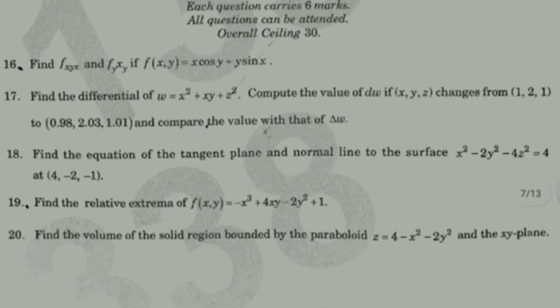Find the relative extrema of f(x,y) = -x³ + 4xy - 2y² + 1. This is Section B, finding the relative extrema — the function's maximum, minimum, relative maximum, relative minimum, absolute maximum, and absolute minimum.